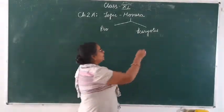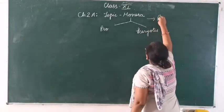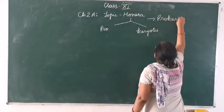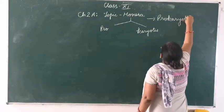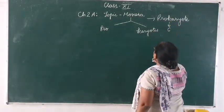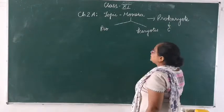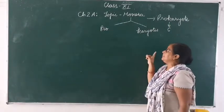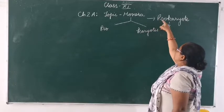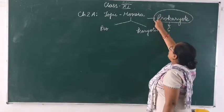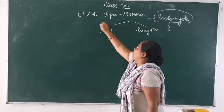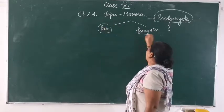This Monera is also known as Prokaryote. So some ways you will get the study that will be written as 'k' and some ways you will get the study that will be 'c'. But both are similar. So this Monera is also known as Prokaryote, which is derived from two Greek words — that is 'pro' and 'karyon'.